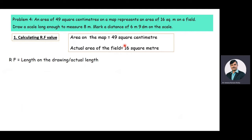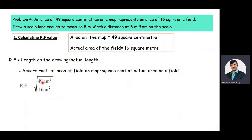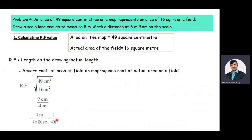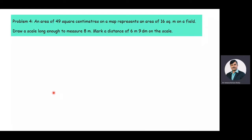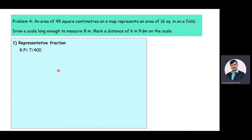Both numerator and denominator must be in the same units. The square root of 49 is 7, and the square root of 16 is 4, giving us 7 centimeters by 4 meters. Converting: 7 centimeters divided by 4 × 100 centimeters gives 7 by 400. Therefore, the representative fraction value is 7/400.